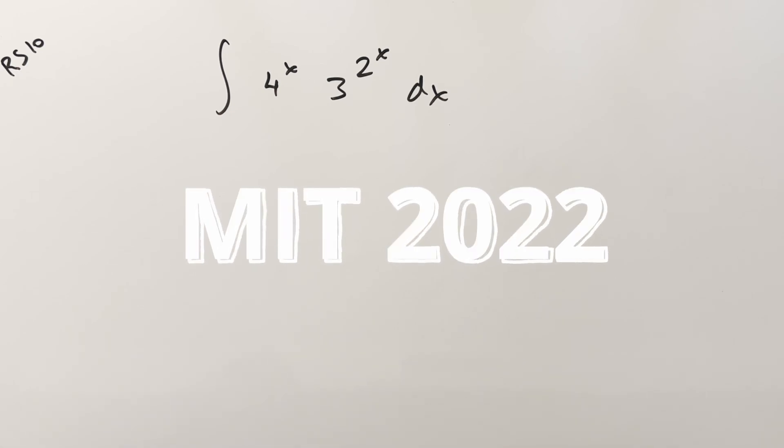Okay, we have another integral from the MIT integration B 2022, regular season number 10. We have the integral of 4 to the x times 3 to the 2x dx.